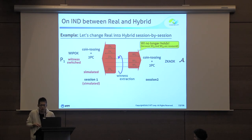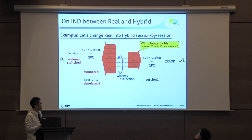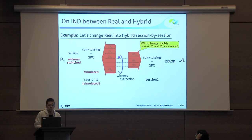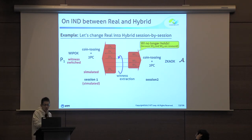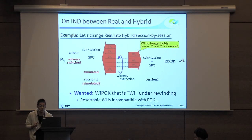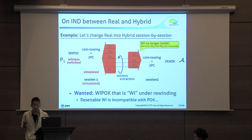This is problematic, because if we try to simulate session two, we need to change the witness in the WI proof, and if we can't use witness indistinguishability here, we cannot show the indistinguishability. You might think that for this specific example you can solve this problem in some way, but in general this problem is not so easy to solve. Essentially what we want is a witness indistinguishable proof of knowledge that satisfies some witness indistinguishability even when it is rewound.